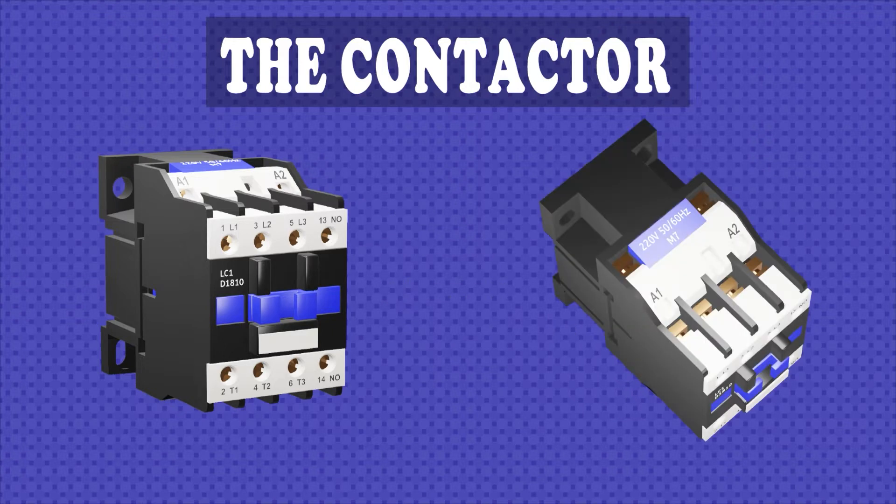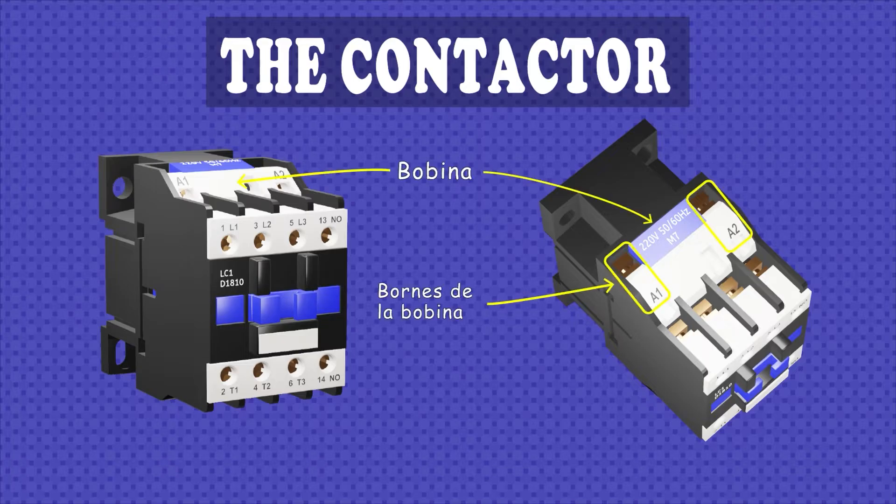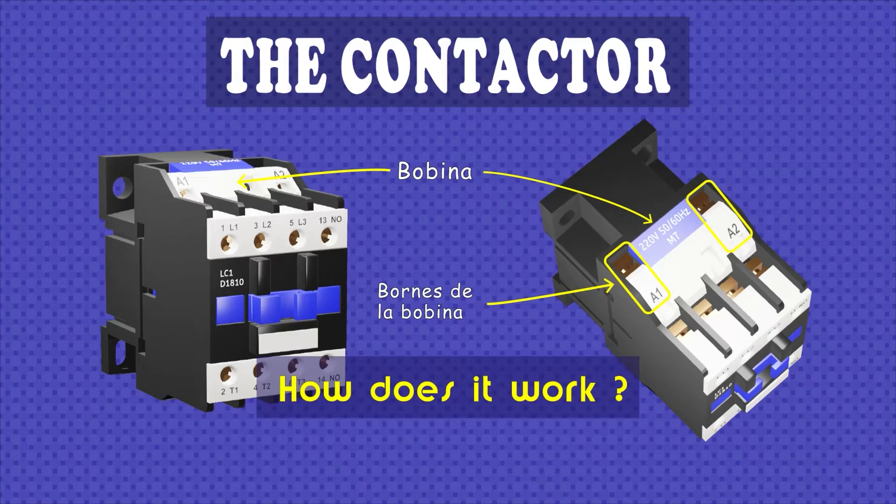For example, the contactor on the left, if we see from the top, we can see the supply voltage characteristics that the coil must have, which is 220 volts at 50 or 60 hertz. All of this will be described in more detail in the course of this video.